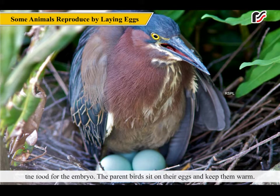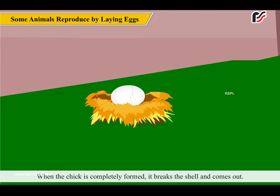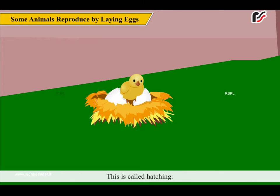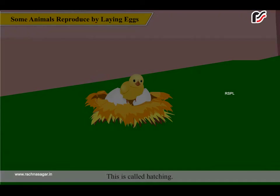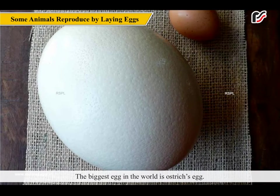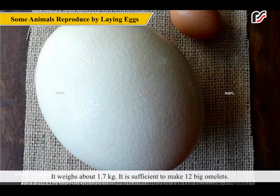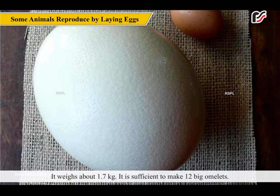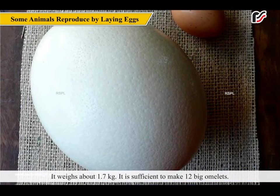The parent birds sit on their eggs and keep them warm. When the chick is completely formed, it breaks the shell and comes out. This is called hatching. The biggest egg in the world is the ostrich's egg — it weighs about 1.7 kg, sufficient to make 12 big omelettes.